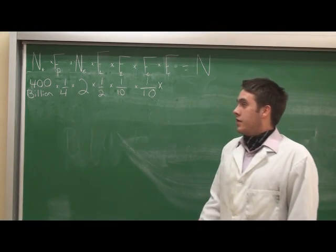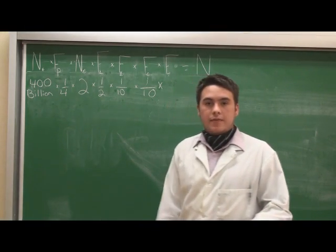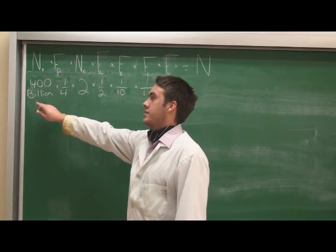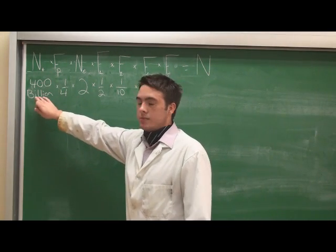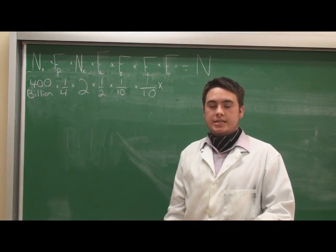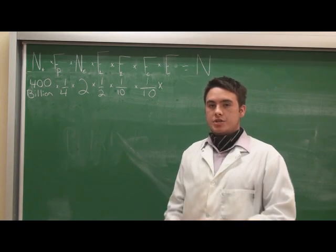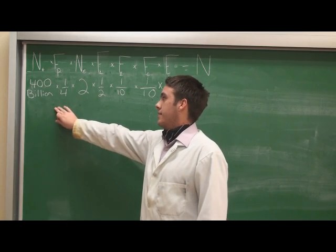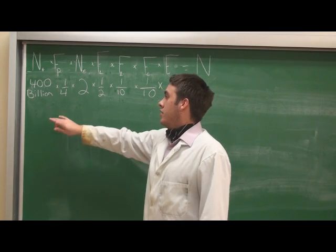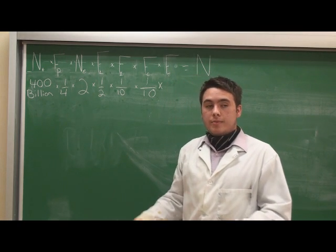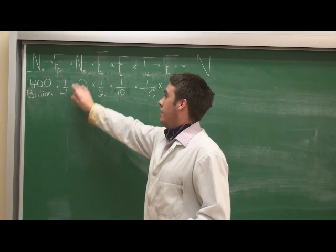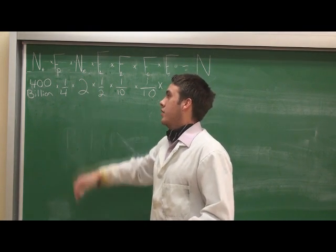So we have to give numbers to our variables. We have N sub star, the number of stars in the Milky Way galaxy — we'll say that's 400 billion. We figured this out by taking small representative portions of the night sky and counting each individual star in it, and it came up to about 400 billion. Then the fraction of those stars which contain planets — the number of those planets which are Earth-like.